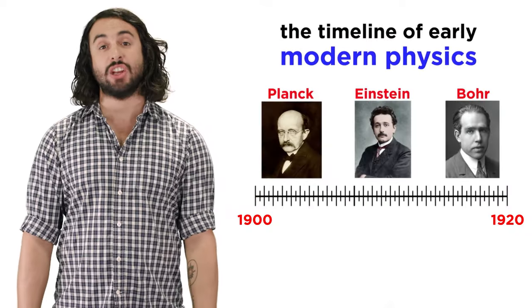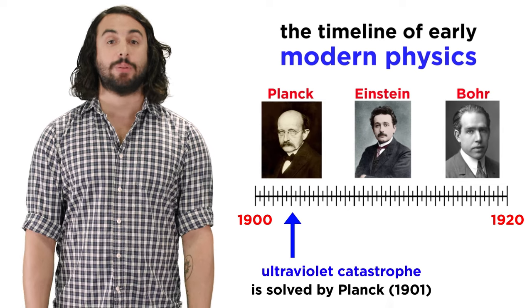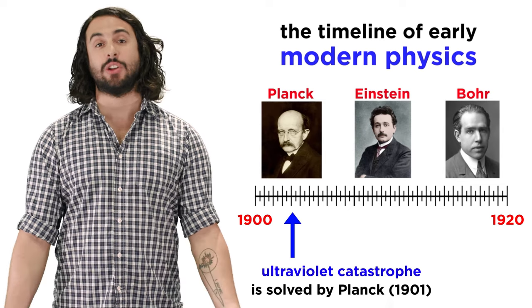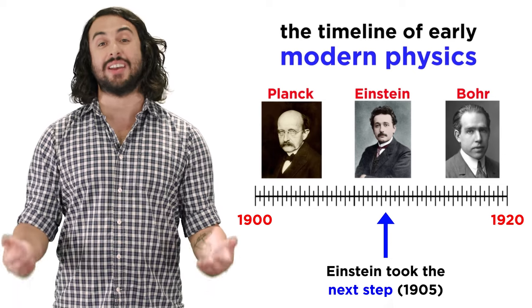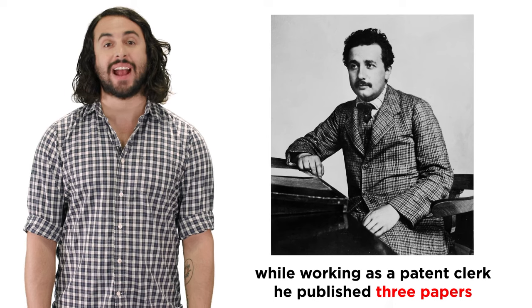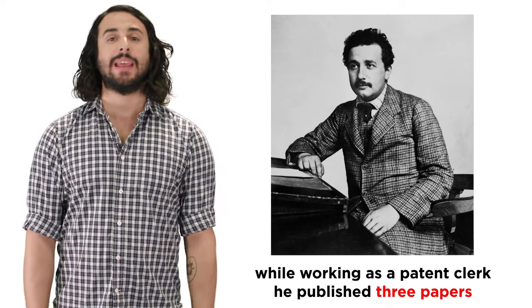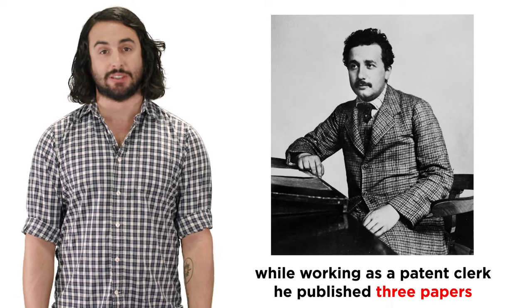We are now moving through the initial discoveries that brought about modern physics. Planck set things into motion in 1901, and the man who was to carry the torch next was none other than Albert Einstein. In 1905, while working as a patent clerk in Switzerland, he published three seminal papers that revolutionized physics.